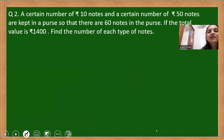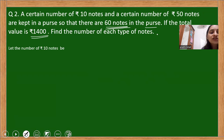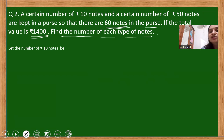Let us see the second question. A certain number of rupees 10 notes and a certain number of rupees 50 notes are kept in a purse. We do not know the actual number of notes of each type in the purse. There are 60 notes in total. If the total value of the money is 1400 rupees, find the number of each type of notes. We need to be very clear about what is asked: find the number of each type of notes. So we need to keep the number of notes as x.